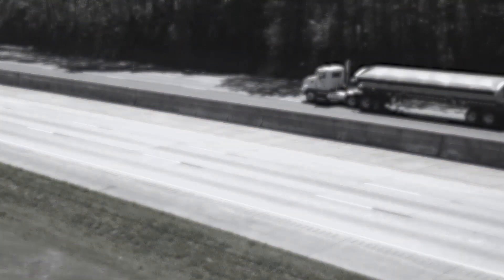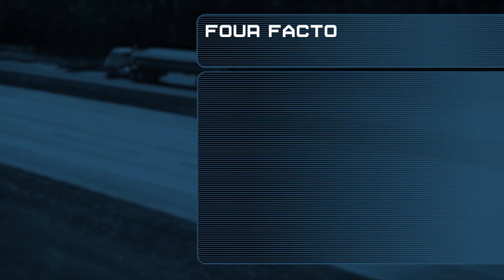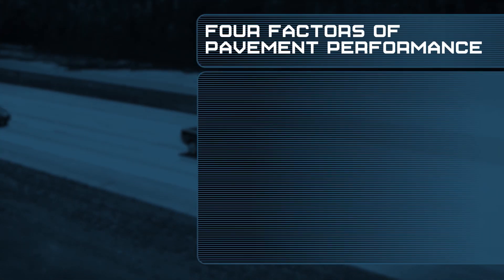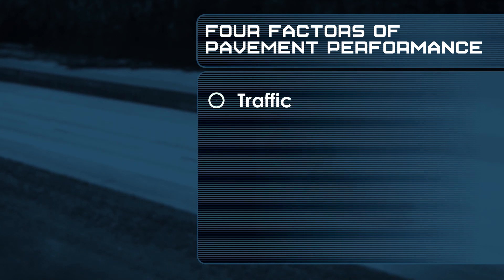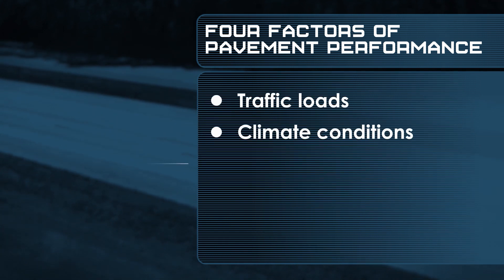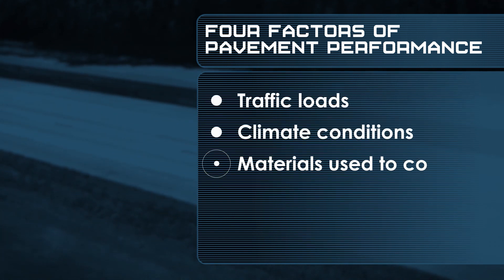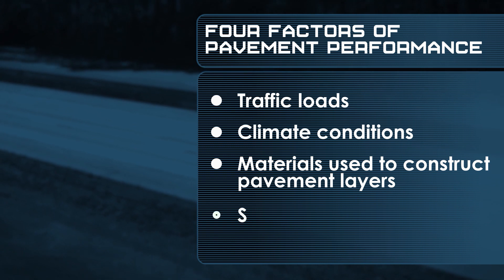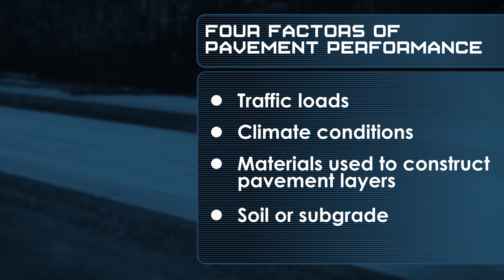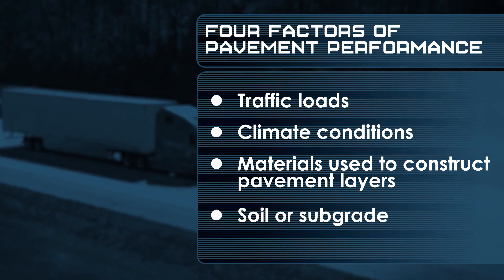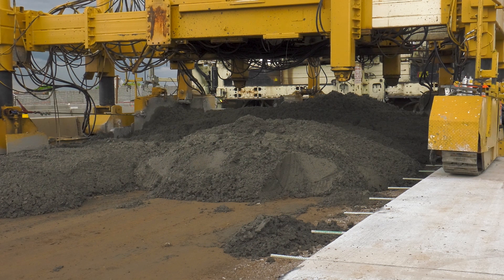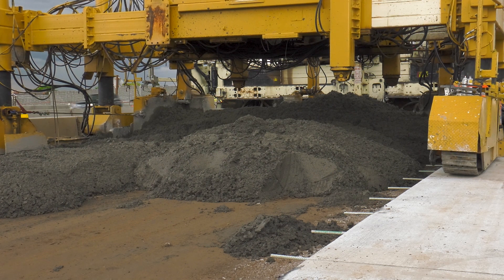Pavement performance is a complex interaction among four factors: traffic loads, climate conditions, the materials used to construct the various pavement layers, and the soil or subgrade that the pavement is built on. For each unique combination of these factors that impact pavement performance,